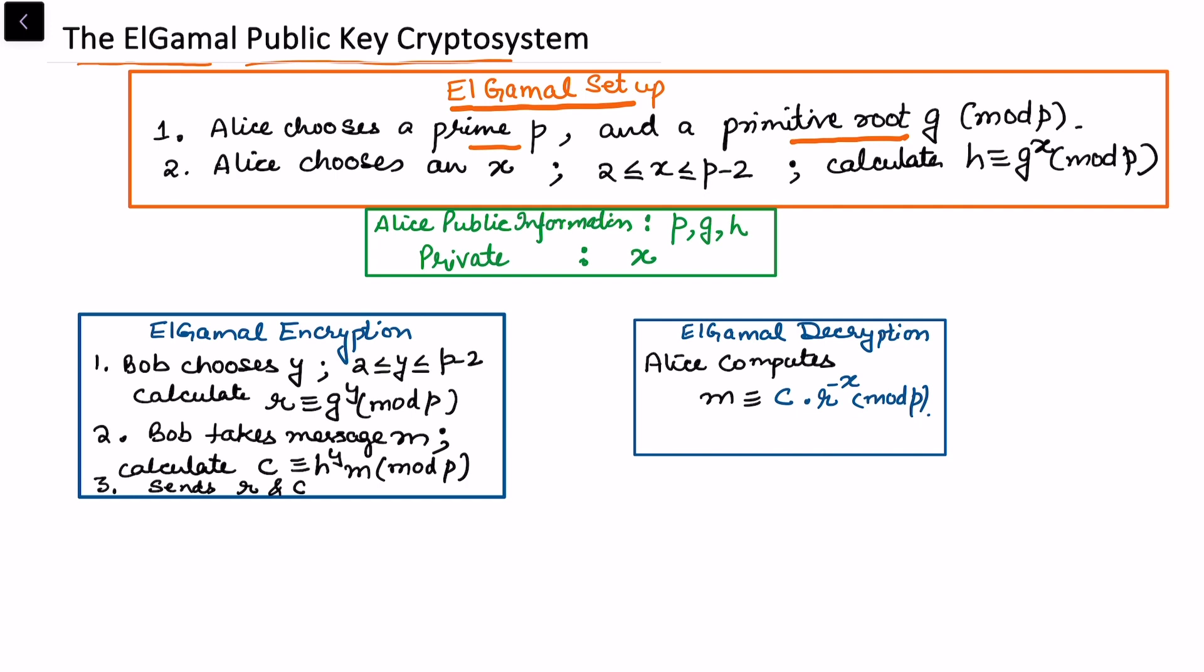Alice chooses an integer x such that x lies between 2 and p minus 2, and calculates h. Now this h we can associate with a discrete log problem. We can simply say discrete log of h is x, which appears in the exponent with respect to mod p, or we can say here we have taken g as a primitive root so we can simply write g in the base.